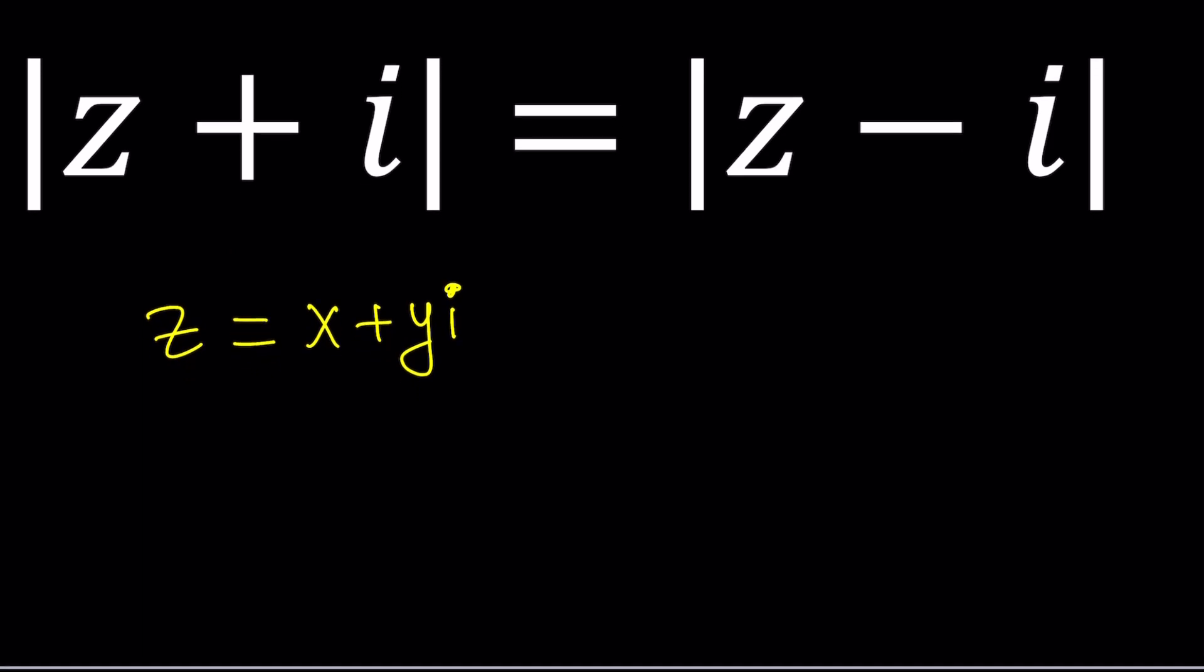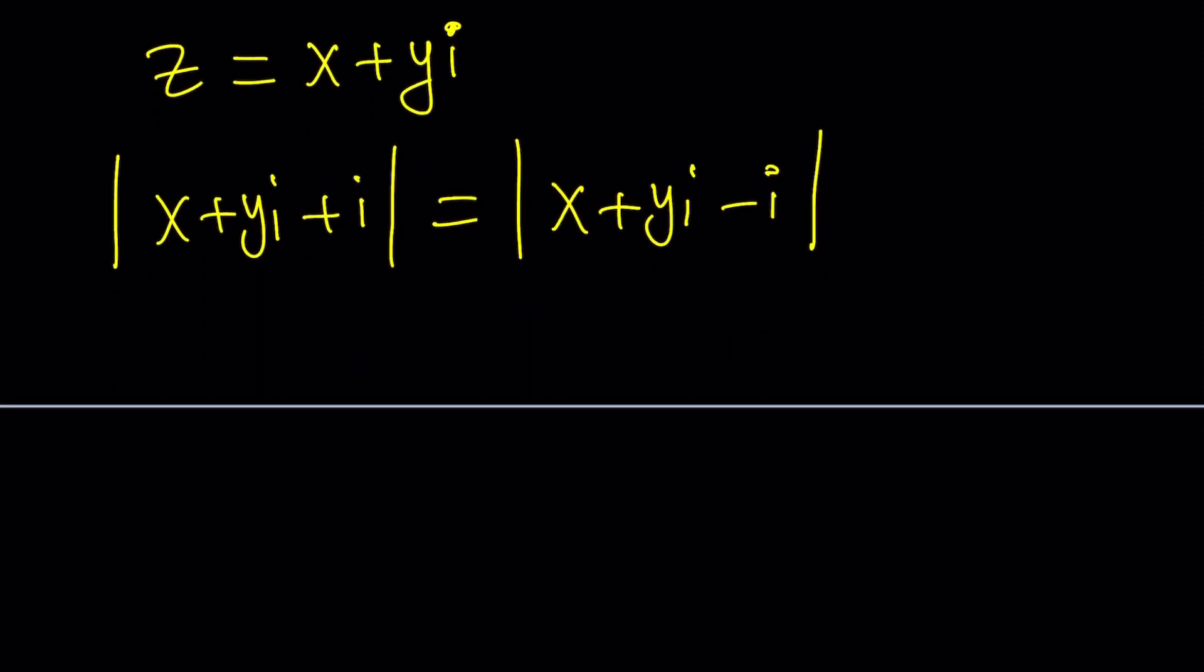So let's replace Z with X plus Y I, and then take the absolute value. So we're going to get X plus Y I plus I, and then here, X plus Y I minus I.